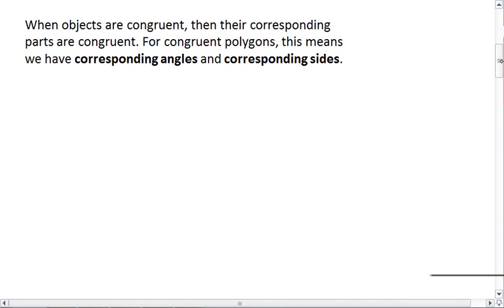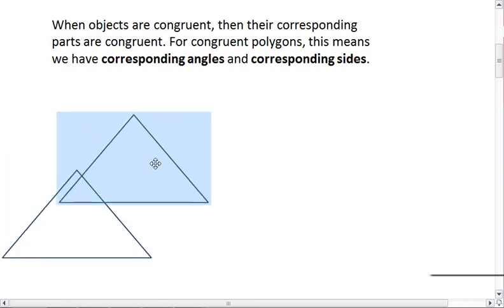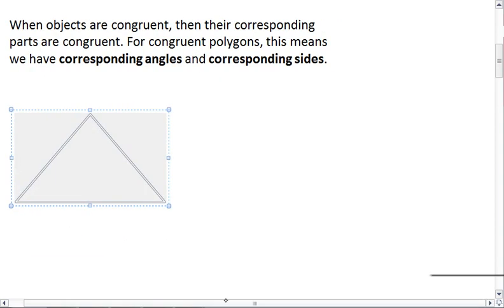We need to notice something. When objects are congruent, then their corresponding parts are congruent. So let's look at two congruent triangles, since that's what this chapter is about.